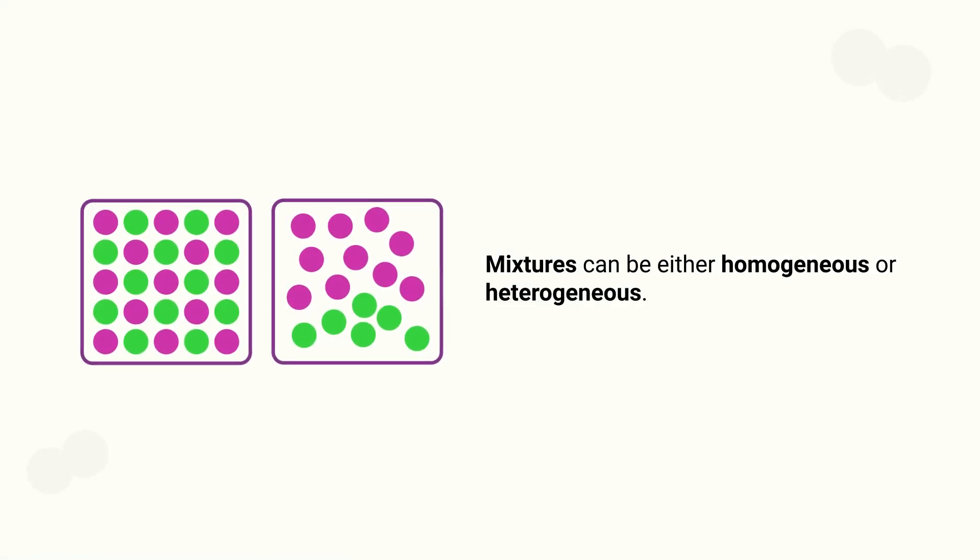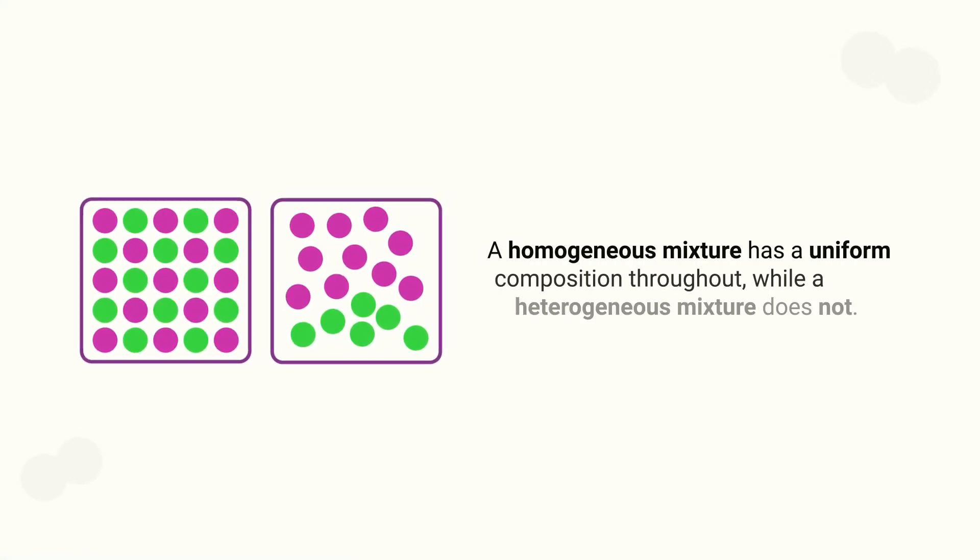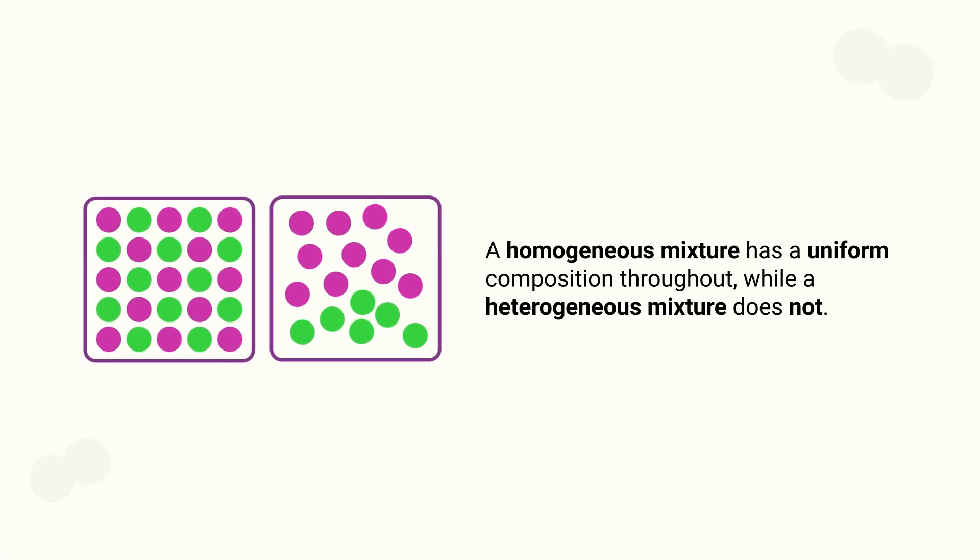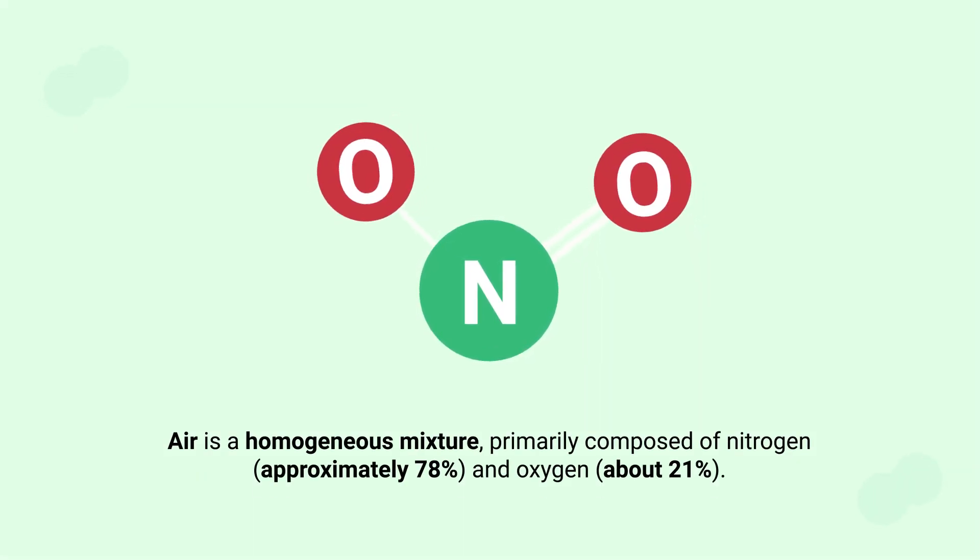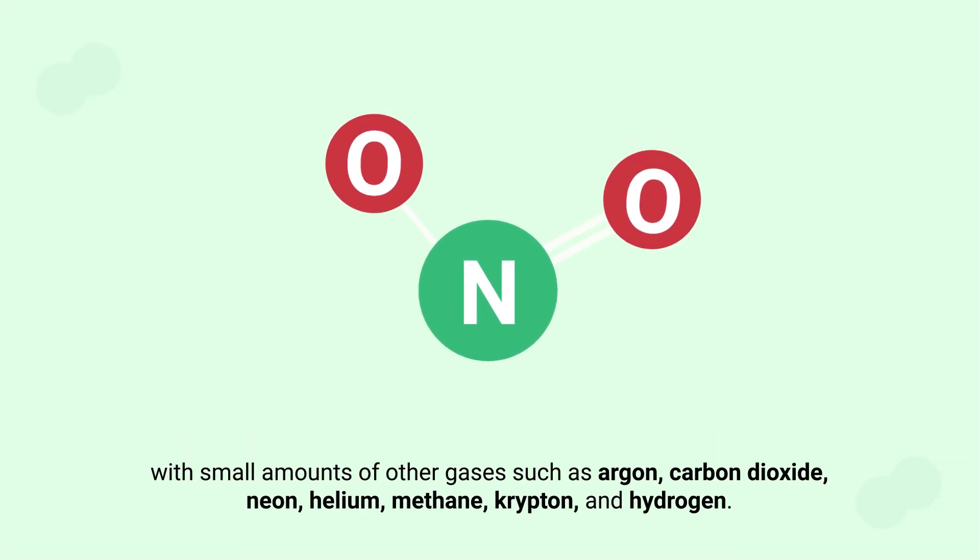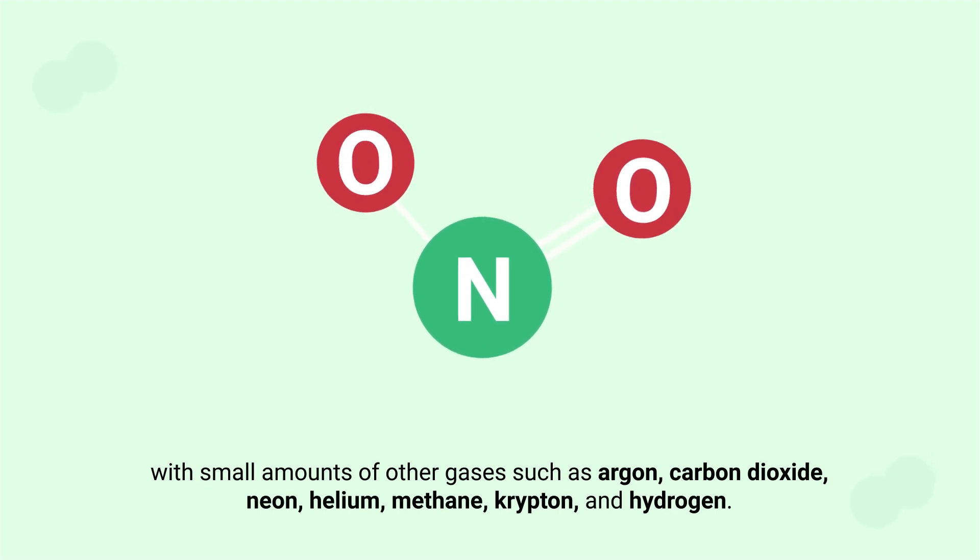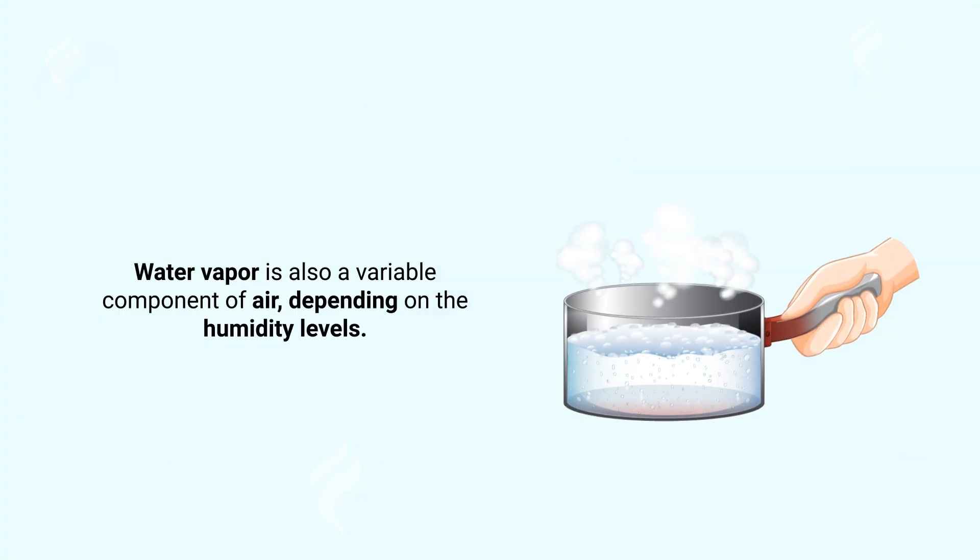Mixtures can either be homogeneous or heterogeneous. A homogeneous mixture has a uniform composition throughout, while a heterogeneous mixture does not. Air is a homogeneous mixture primarily composed of approximately 78% nitrogen and about 21% oxygen, with small amounts of other gases such as argon, carbon dioxide, neon, helium, methane, krypton, and hydrogen. Water vapor is also a variable component of air depending on the humidity levels.